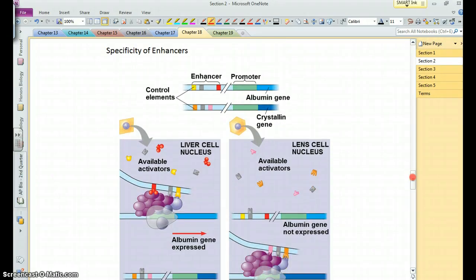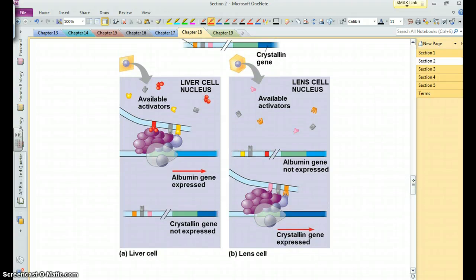So even though each of our cells contains the complete genome, we only express a subset of those genes depending upon which of these activators and transcription factors are present in the cell. So while in the liver cell you have both the albumin and crystallin gene, and the same in the eye, you don't express the albumin gene in the eye because it's not necessary, but you do express the crystallin gene, and you have the activators and transcription factors to help do that, and vice versa in the liver. You express the albumin gene, but not the crystallin gene, because that wouldn't make sense.